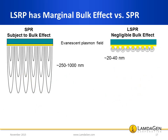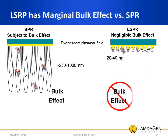A second key difference between SPR and LSPR becomes particularly notable in biosensing applications — the difference is in the sensing volume of their respective plasmon fields, captured by what is referred to as bulk effect. Due to the much larger plasmon field of SPR, up to 1,000 nm versus LSPR's 40 nm, biomolecules that are not actually bound at the sensor surface can be detected in SPR, causing a bulk effect or false positive reading, as depicted by the three unbound biomolecules shown in the sketch. In contrast, in LSPR, only the molecules bound at the surface are captured by the localized surface plasmon. The other three are invisible to the sensor and do not contribute to the signal. Thus, LSPR has marginal bulk effect.